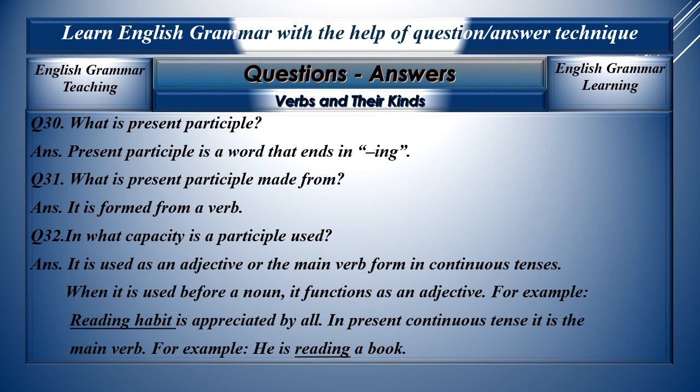Question number thirty: What is present participle? Present participle is a word that ends in -ing, but it is different from a gerund. Question thirty-one: What is present participle made from? It is made from a verb. Question thirty-two: In what capacity is present participle used? It is used as an adjective or the main verb form in continuous tenses. When used before a noun it functions as an adjective. For example, 'reading habit is appreciated by all' — reading comes before the noun 'habit' and becomes an adjective. In present continuous tense it is the main verb: 'he is reading a book'.